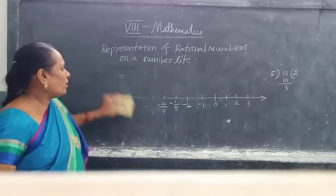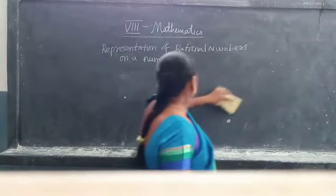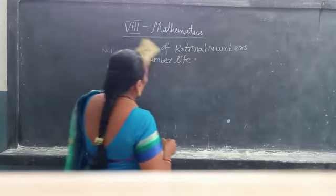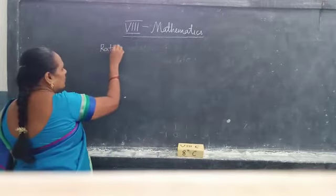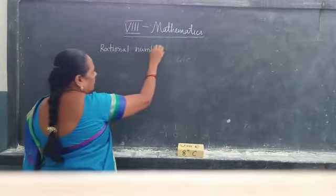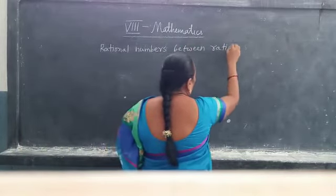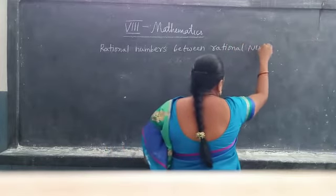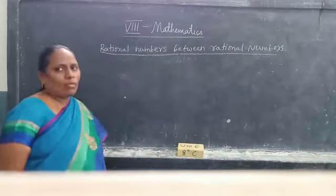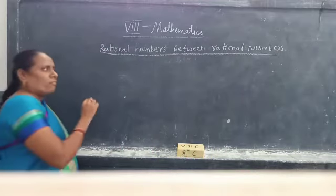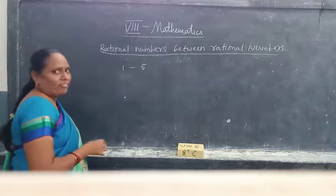Now we will see rational numbers between rational numbers. Before we go to this, can you tell what numbers lie between 1 and 5? What are the natural numbers between 1 and 5?